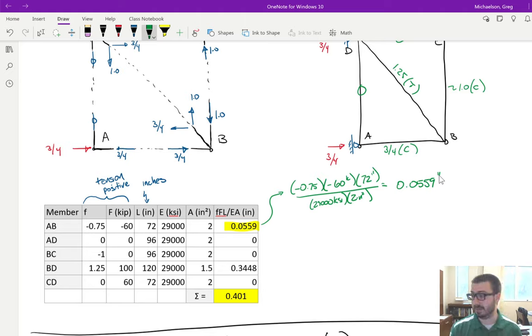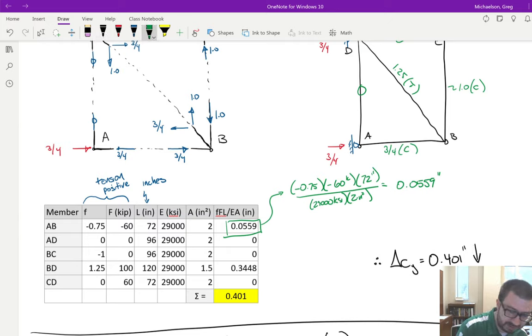For row AD it's going to be 0, and row BC it's 0, and for row CD it's 0, because we either have a big F or a little f that's 0 in those rows. The only other row that gives you an actual value is BD, and you can see that's 0.3448. When it's all said and done, you get a value of 0.401. That means the deflection at joint C in the vertical direction is 0.401 inches downward.